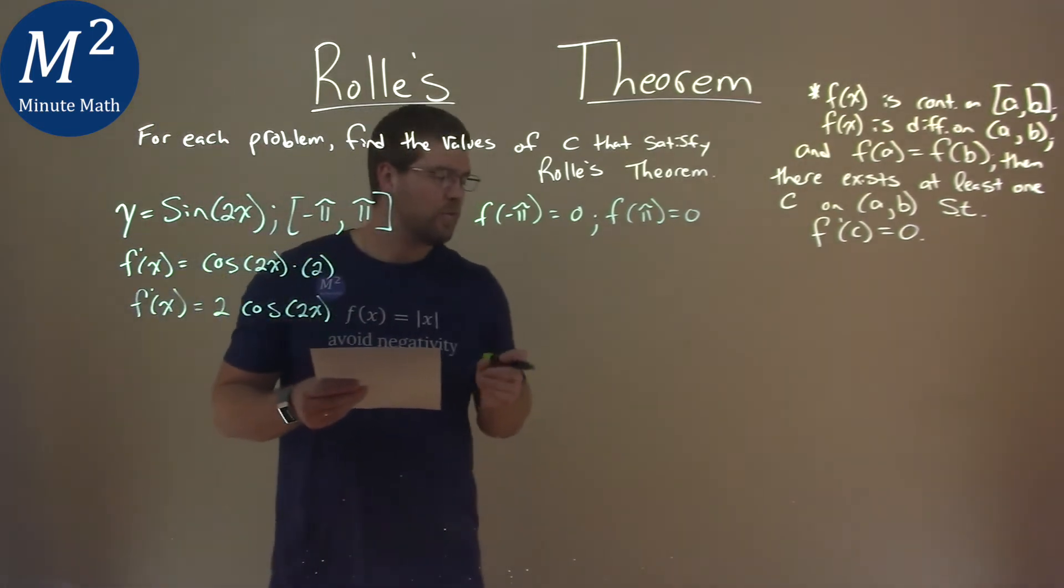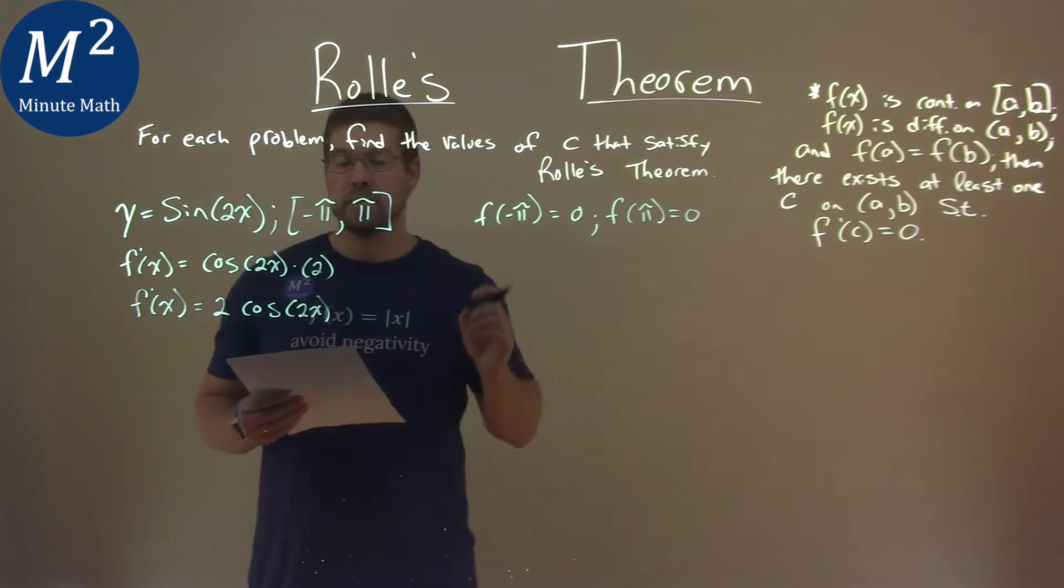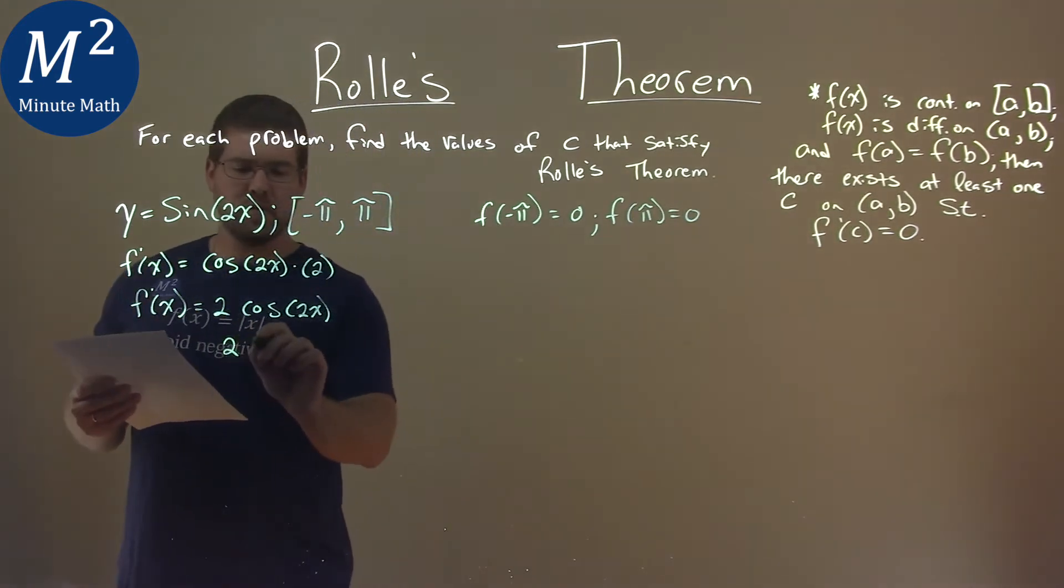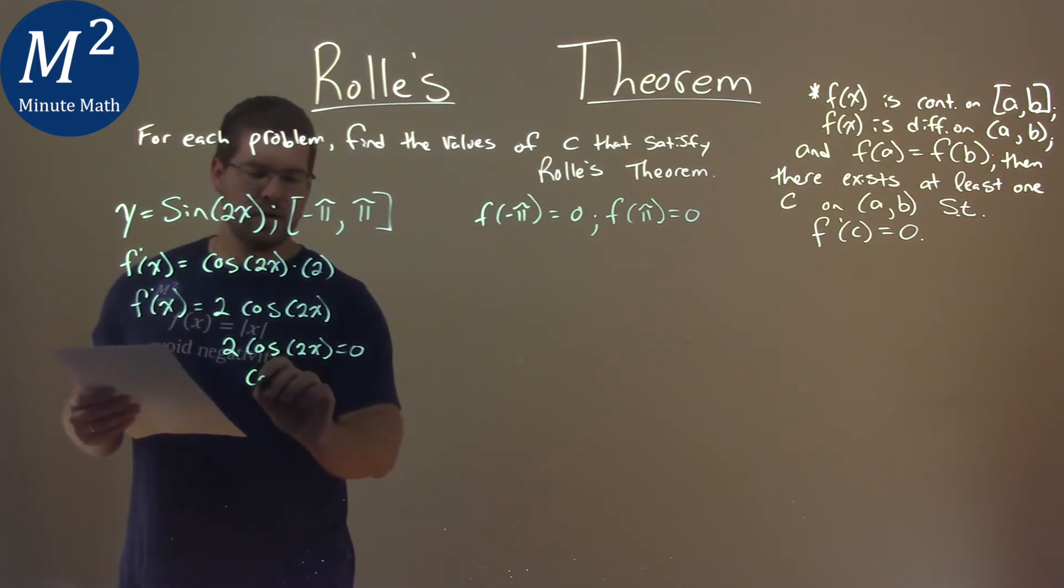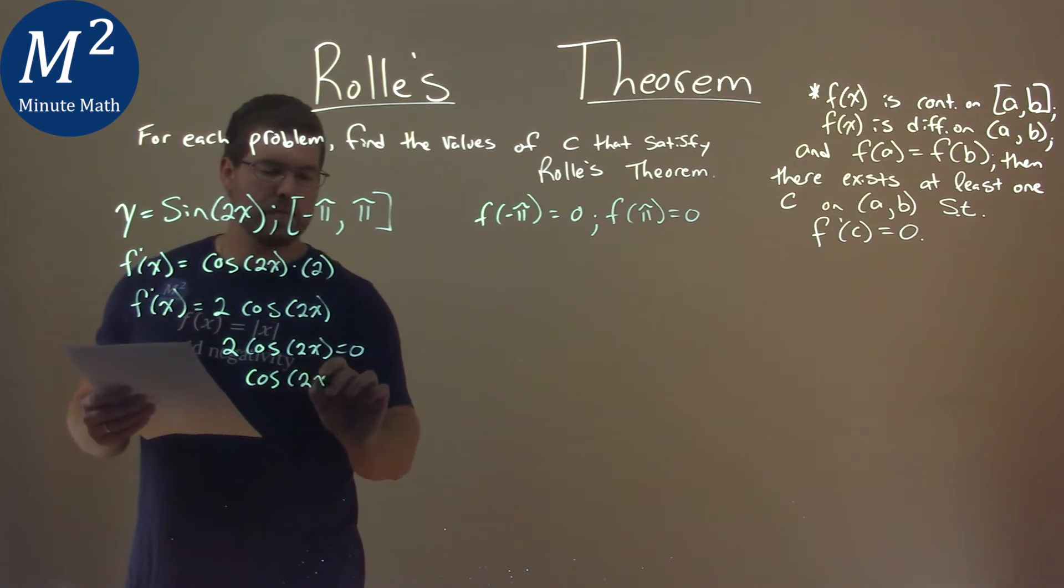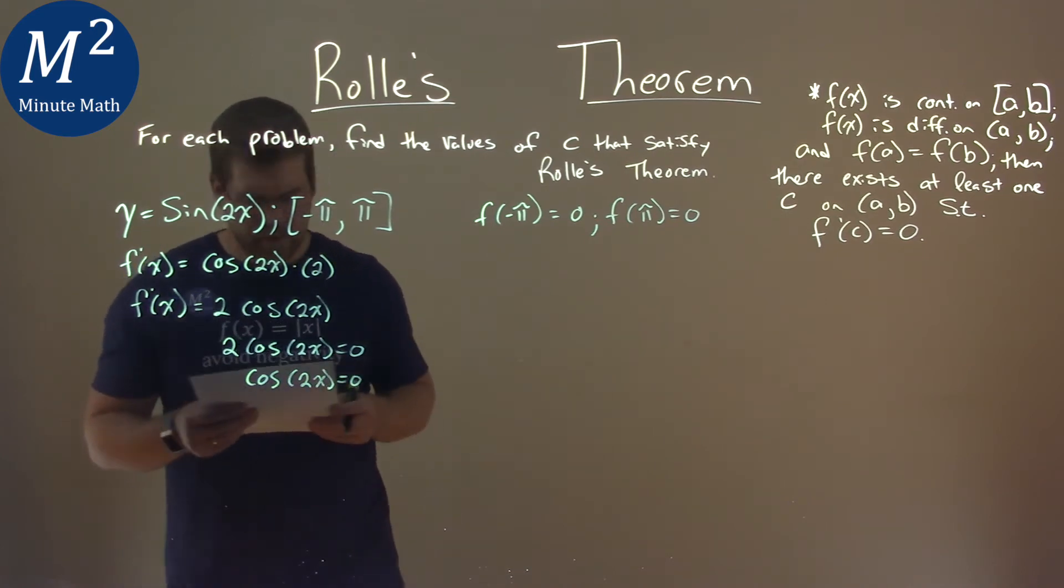Now, to apply Rolle's Theorem, we need to set this equal to zero. So we take 2 cosine of 2x and set it equal to zero, divide both sides by 2, and we get cosine of 2x is equal to zero.